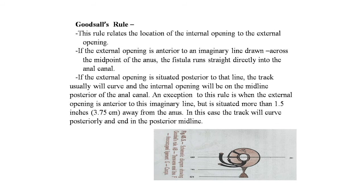Goodsall's rule relates the location of the internal opening to the external opening. If the external opening is anterior to an imaginary transverse line drawn across the midpoint of the anal canal, the fistula runs straight directly into the anal canal. If the external opening is situated posteriorly to that imaginary line, the tract will curve and the internal opening will be at the midline posterior of the anal canal, i.e., at the 6 o'clock position.